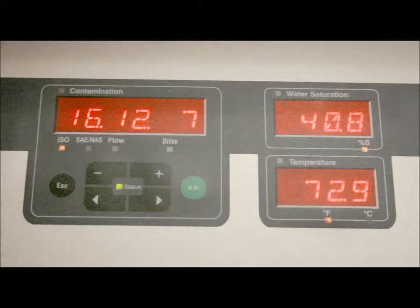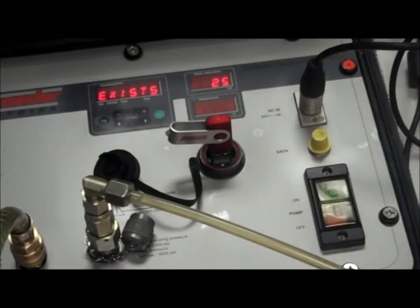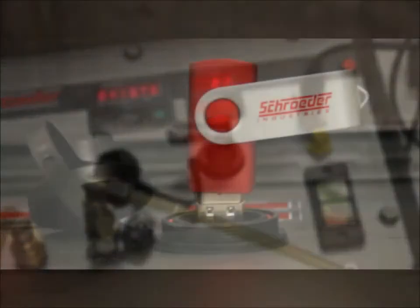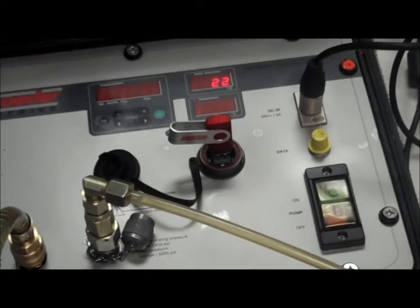If you want to download the information that you've now obtained, there's the USB port, and you can see here we've attached the flash drive to the unit. This unit stores 20,000 data points, and you can download all 20,000 data points if you've been running this as an in-line sampling unit. But in this case, we're running a bottle sample, so it'll download that particular information.